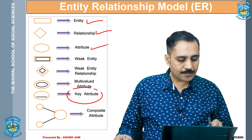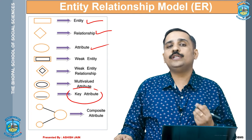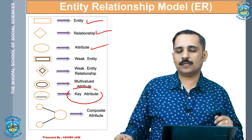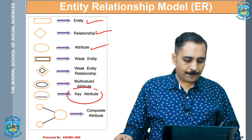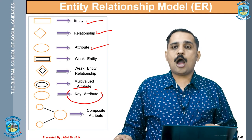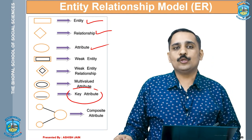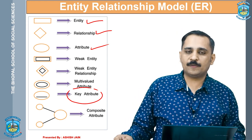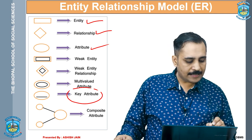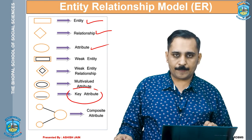Then we have the key field attribute, which is very important. Key field means there are certain fields whose value is unique for every record, so we can distinguish two different entities of the same type. For example, student name can be common, address can be common, even father's name can be common — but every student has a unique enrollment number. This unique field is used to identify records when multiple fields have common values. This is called a key attribute, and we underline it in the ER diagram to show it is the key value.